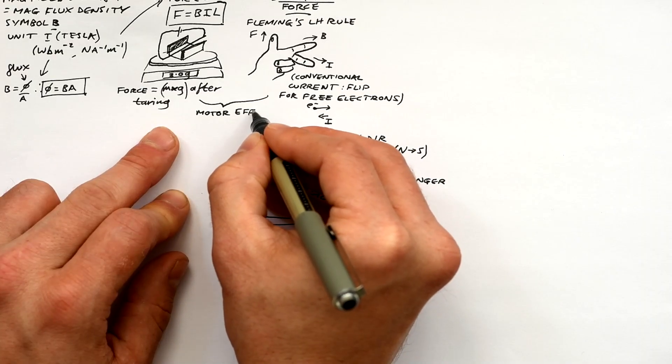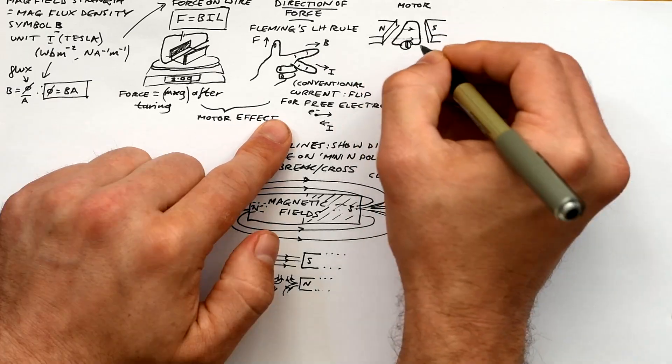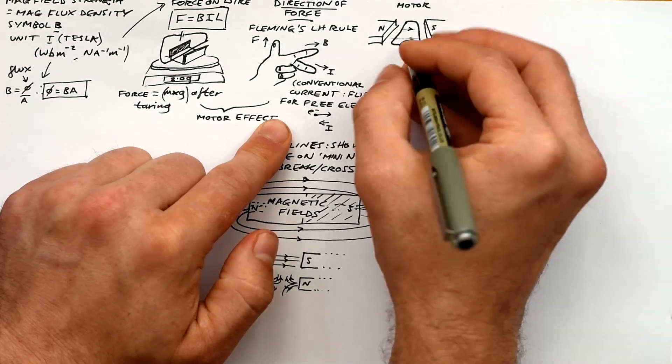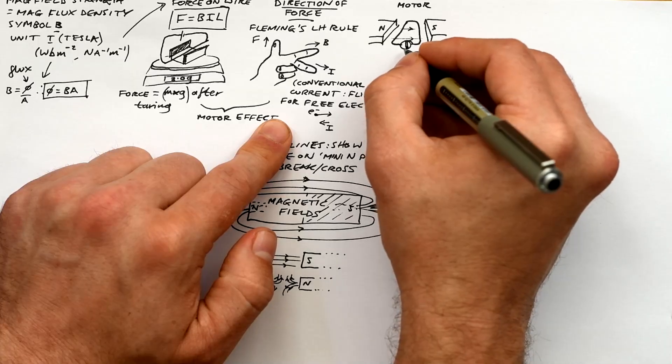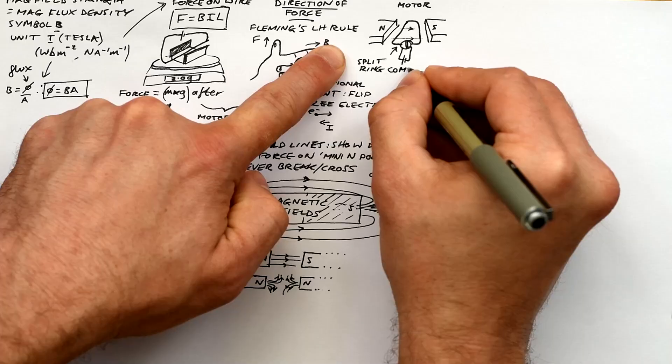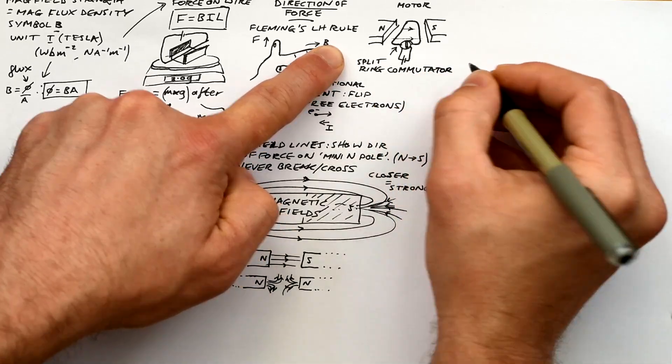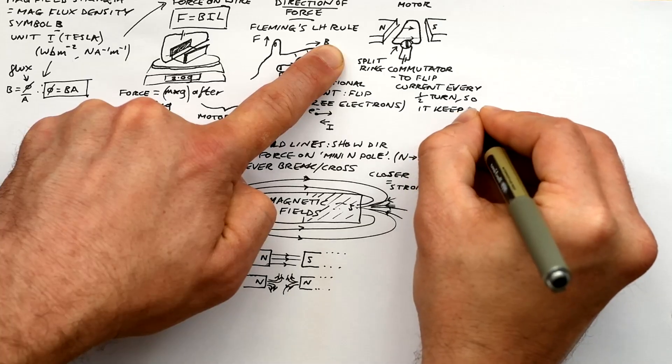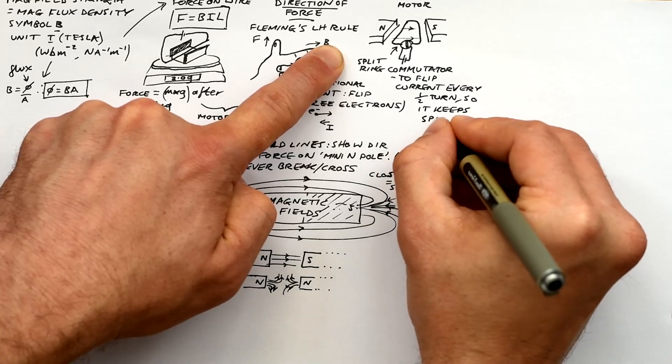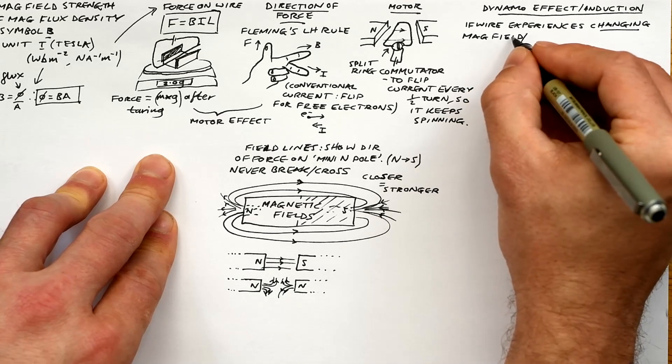So F-bill and forces on wires, it's called the motor effect and we can use this idea in what we call a motor. We have a magnetic field made by two magnets and we have a coil of wire. Now usually they're going to be thousands of turns and loops and that's attached to the power supply via split ring commutator and that's there to make sure that the current flips every half a turn. If the current goes around the loop the same way all the time, then it will just go to the vertical position and then just stop. It won't go any further.